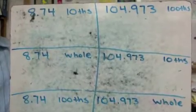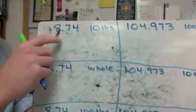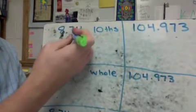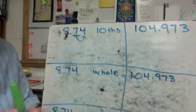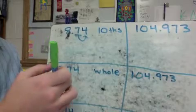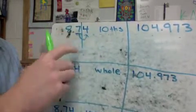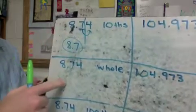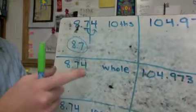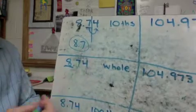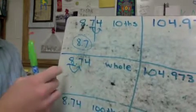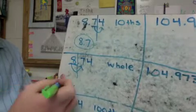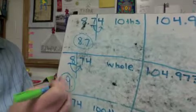Let's try these. First: 8 and 74 hundredths, rounded to the tenths place. Underline the tenths place and look to the right — that is a 4. Four or below, we keep the same. Cut the number off there and keep the underlined number the same. Answer: 8 and 7 tenths. Next: 8 and 74 hundredths rounded to the nearest whole number. Underline the whole number and look to the right — that is a 7, which is 5 or above, so I round up. Answer: 9 wholes.